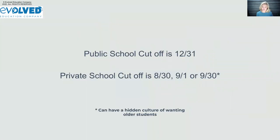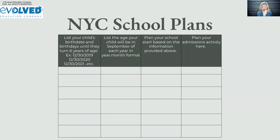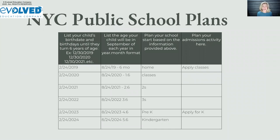Cutoff dates are different between systems. Public school cutoff is December 31st, while private schools typically use August 30th, September 1st, or sometimes September 30th — independent schools generally want children to be older. If your child has a late summer or fall birthday, this can really impact your planning. We use a worksheet in our course to help families plan out timing, especially in the early years.